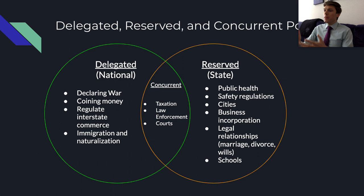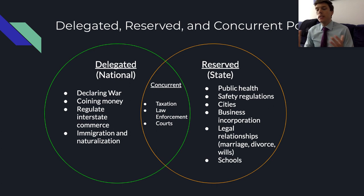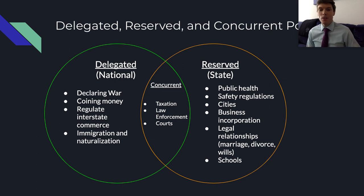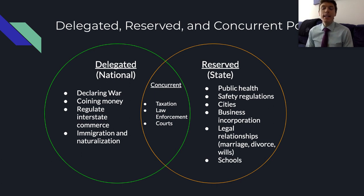Some delegated powers include: declaring war — states can't do that; coining money, which was a weakness of the Articles of Confederation; regulating interstate commerce, another Articles challenge; and managing immigration and naturalization, which is going to be particularly important when we get to the 14th Amendment in Unit 3.